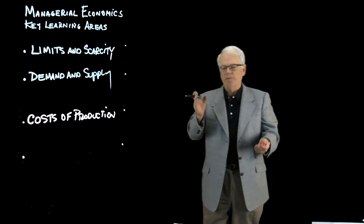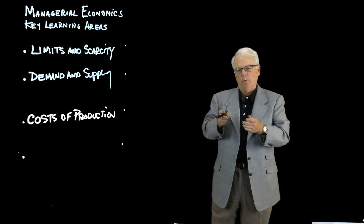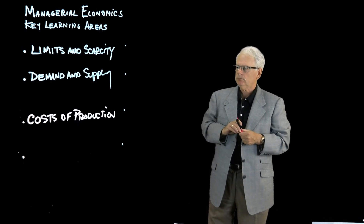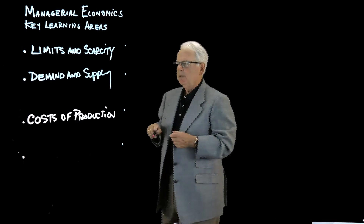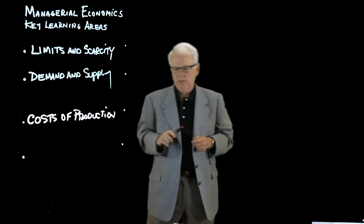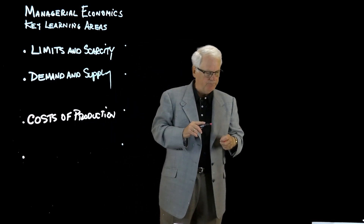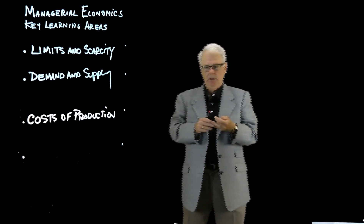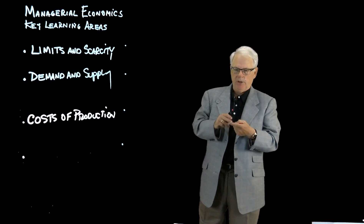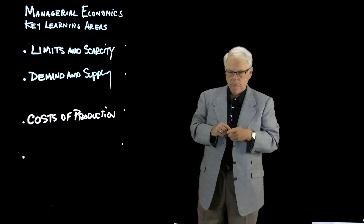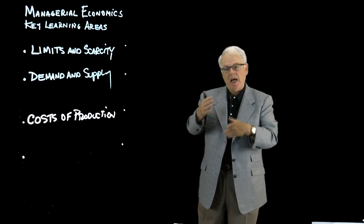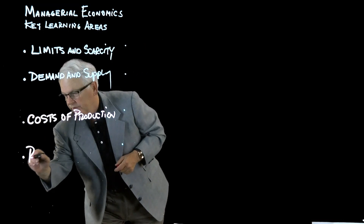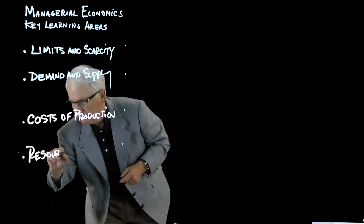We'll see how costs vary depending upon whether we have perfect competition or imperfect competition. We're also going to take a look at how resources get paid. Economists and business leaders define resources as land, labor, capital, and entrepreneurial ability. We're going to take a look at how those resources get compensated — resource compensation.